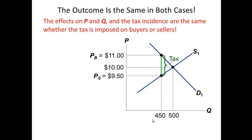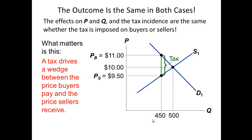So as you can tell, whether we put the tax burden on the buyer or on the seller, in the end it doesn't matter, because the results will still be the same. What the tax ends up doing — even though its intent is to provide revenue for the government so that the government can continue to operate for the betterment of its citizens — the tax in reality drives a wedge between the price that the buyer pays and the price that the seller receives.